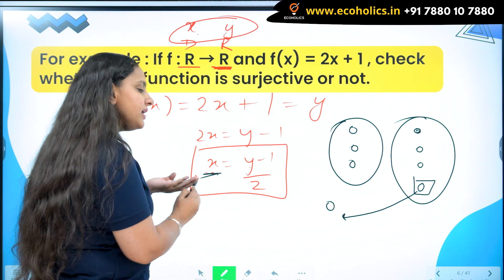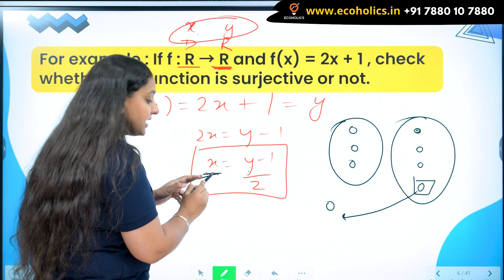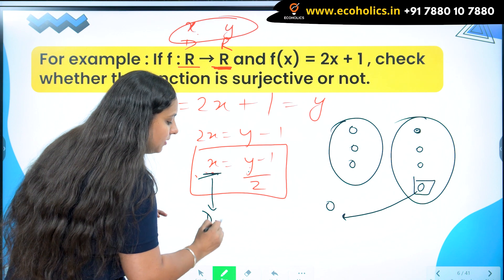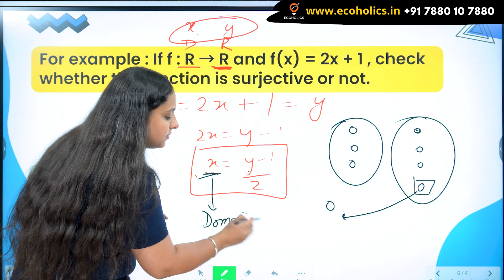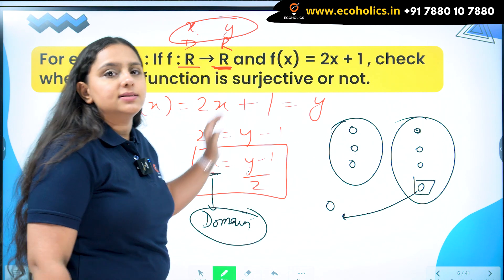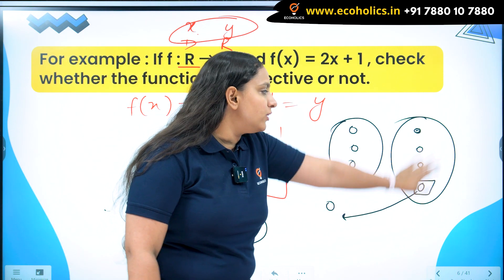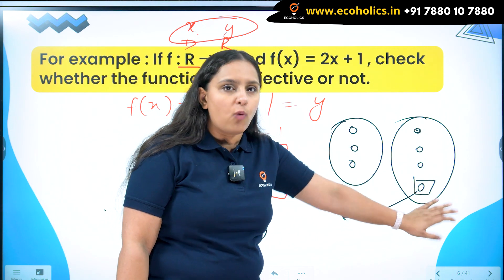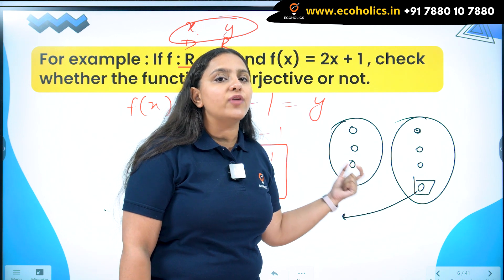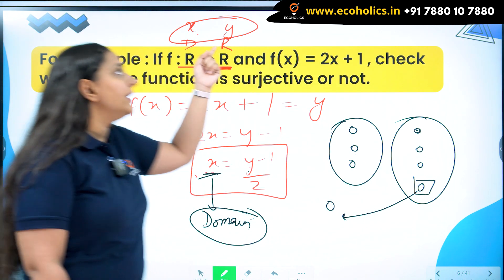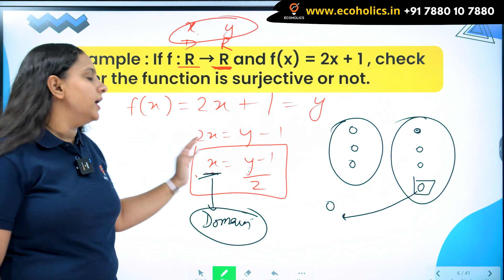Then what's the point? I will get a value of x for every y but that x value should lie in my domain. If it doesn't lie in my domain, it is not my surjective function. I have to check that when I give all values to y, the respective values of x I am getting should lie in my domain. That is the basic idea.